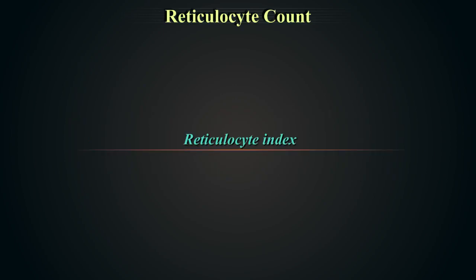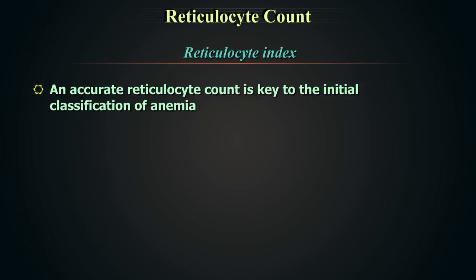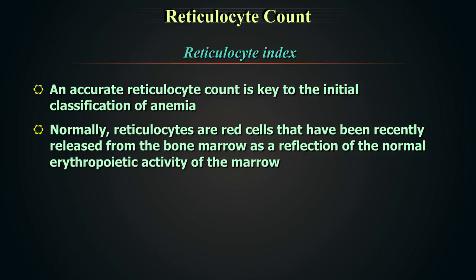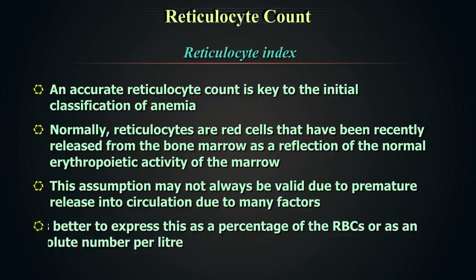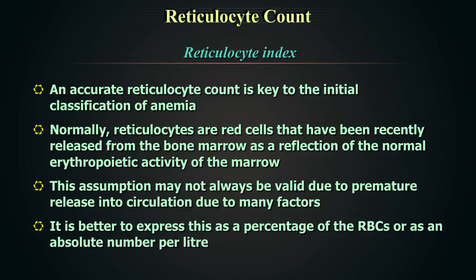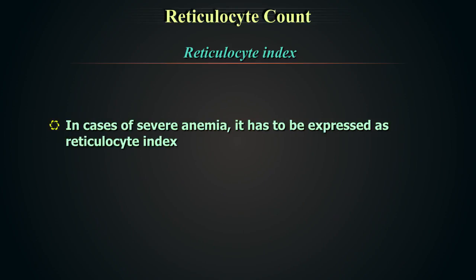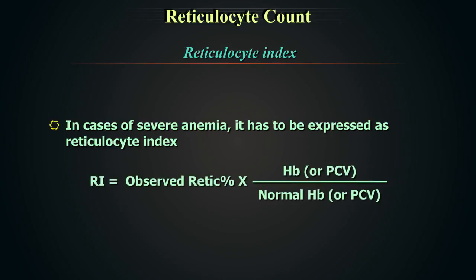An accurate reticulocyte count is key to the initial classification of anemia. Normally, reticulocytes are red cells recently released from the bone marrow reflecting normal erythropoietic activity. However, premature release into circulation due to various factors may alter this assumption. It is better to express results as a percentage of red blood cells or as an absolute number per litre. In cases of severe anemia, the reticulocyte index must be used: Reticulocyte Index = observed reticulocyte % × (patient hemoglobin or PCV / normal hemoglobin or PCV).